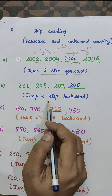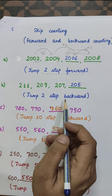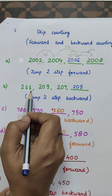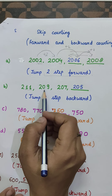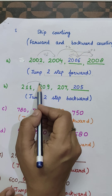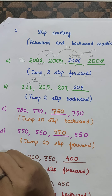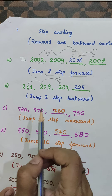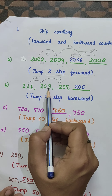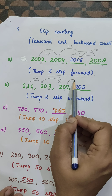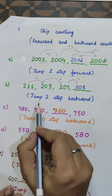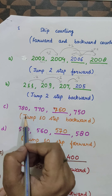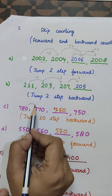Now jump two steps backward means we subtract two each time. For example: 2011, ___, ___, 2005. 2011 minus 2 is 2009, minus 2 is 2007, minus 2 is 2005. So the answers are 2009 and 2007. This is two-step backward counting.